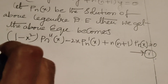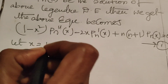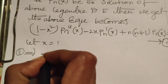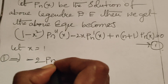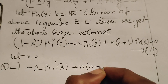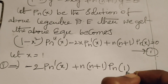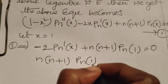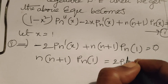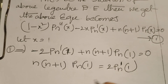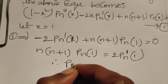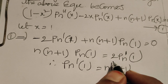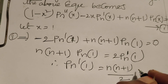Let x = 1; then equation 1 becomes: the (1 - x²) term becomes 0, so we get -2P'n(1) + n(n+1)·Pn(1) = 0. Therefore n(n+1)·Pn(1) = 2·P'n(1), which gives P'n(1) = n(n+1)/2 · Pn(1).